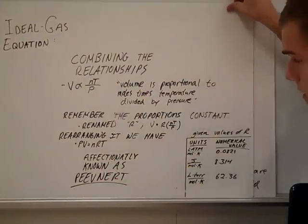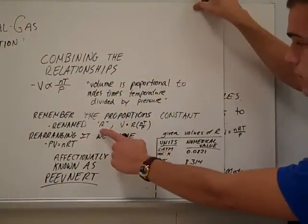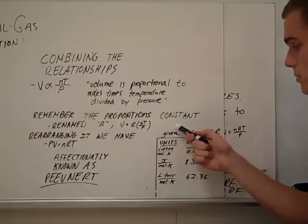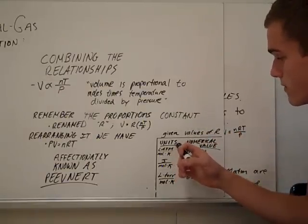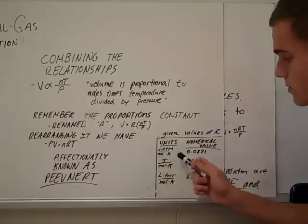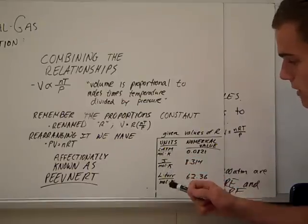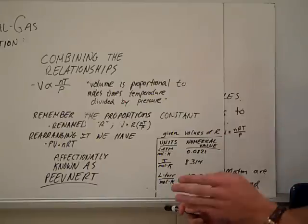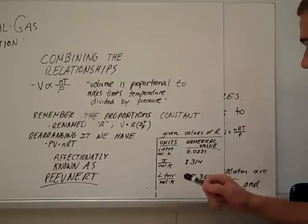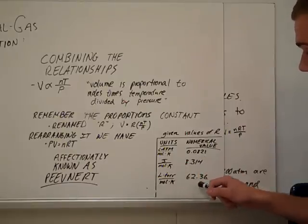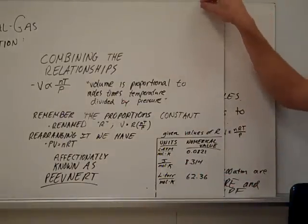Now, for R, our constant, we have a number of given values. These are solely memorization. Here we have units: liter atmospheres per mole Kelvin, joules per mole Kelvin, liters per mole Kelvin, and the numerical values that coincide with them: 0.0821, 8.314, 62.36. All for memorization.